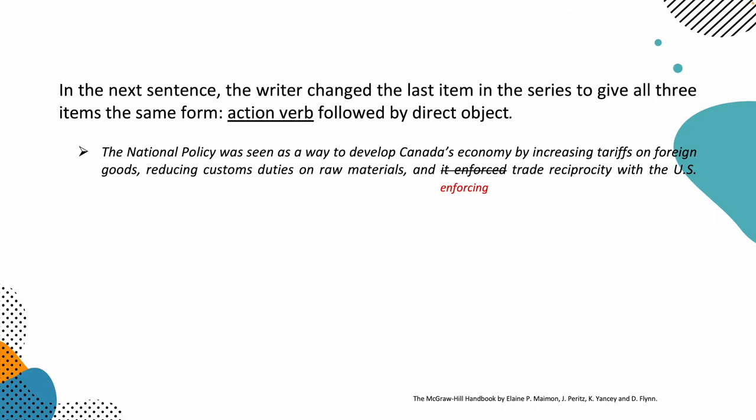In the next sentence, the writer changed the last item in the series to give all three items the same form: action verb followed by direct object. The national policy was seen as a way to develop Canada's economy by increasing tariffs on foreign goods, reducing custom duties on raw materials, and enforcing trade reciprocity with the US. Sounds much better, right?